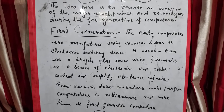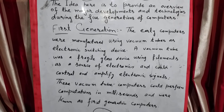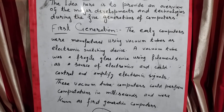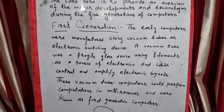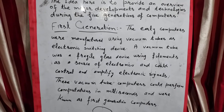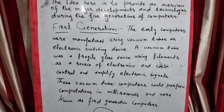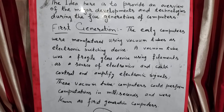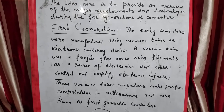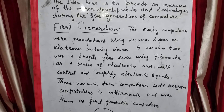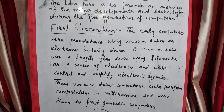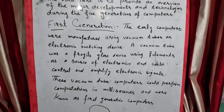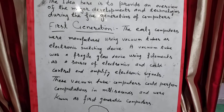First generation: the early computers were manufactured using vacuum tubes as electronic switching devices. A vacuum tube was a fragile glass device using a filament as the source of electronics, and could control and amplify electronic signals. These vacuum tube computers could perform computations in milliseconds and were known as first generation computers.